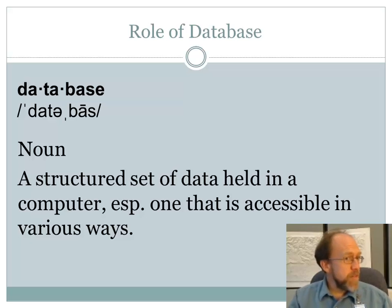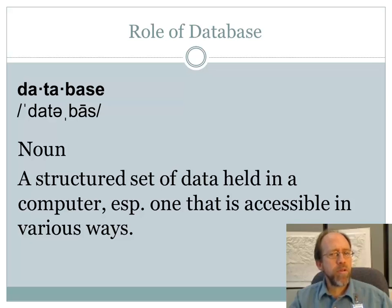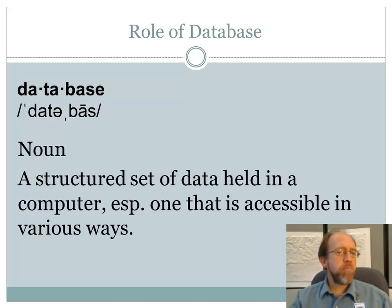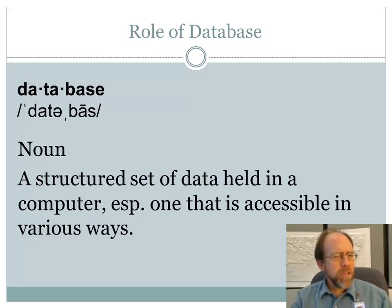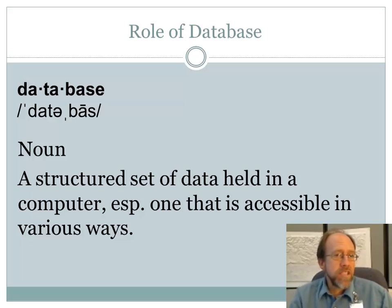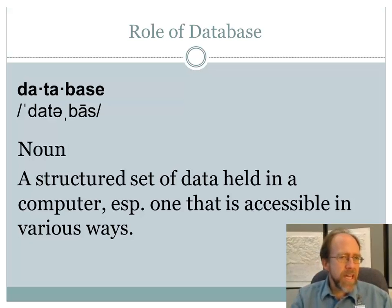So let's first look at the definition. A database is a structured set of data held in a computer, especially one that is accessible in various ways. Data can be a lot of things — numbers, pictures, words — that's all data. You put a structure around that data so that you can actually find it and access it, and you stick it on a computer, you've got essentially a database. That formal definition does pertain to computers.